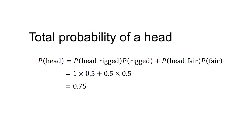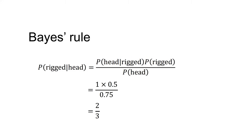To use Bayes' rule, we need the total probability that a head comes up. Using the formula for total probability: P(head) equals the probability of a head given the coin is rigged times the probability that the coin is rigged, plus the probability of a head given the coin is fair times the probability that the coin is fair. That equals 1 × 0.5 + 0.5 × 0.5 = 0.75. Putting this into Bayes' rule: P(rigged|head) equals P(head|rigged) times P(rigged) divided by P(head), which equals 1 × 0.5 / 0.75 = two-thirds.